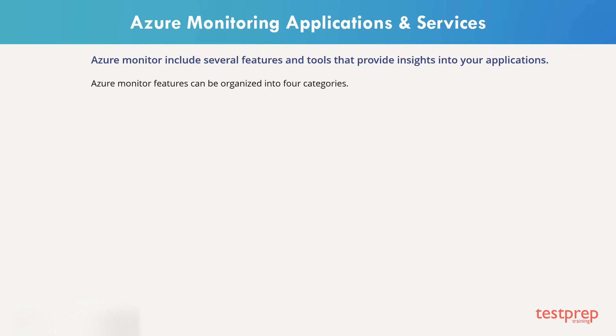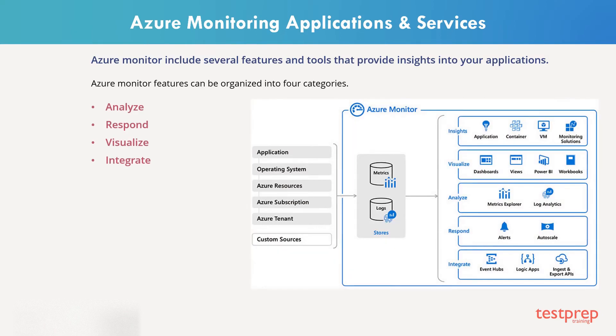Azure Monitor features can be organized into four categories. These categories are: Analyze, Respond, Visualize, and Integrate. The analysis can be done by Application Insights.